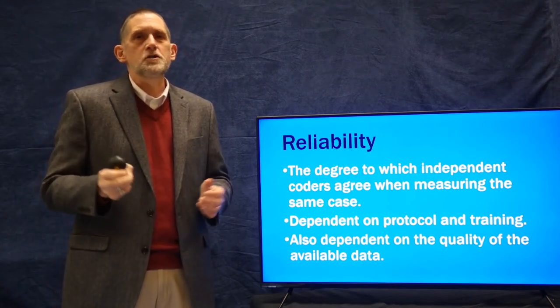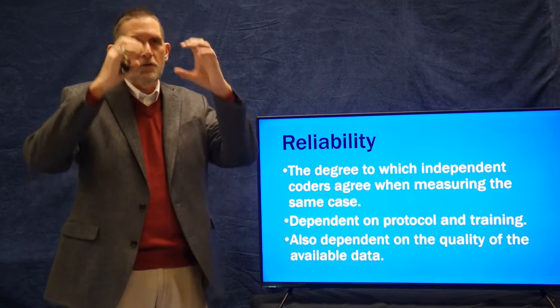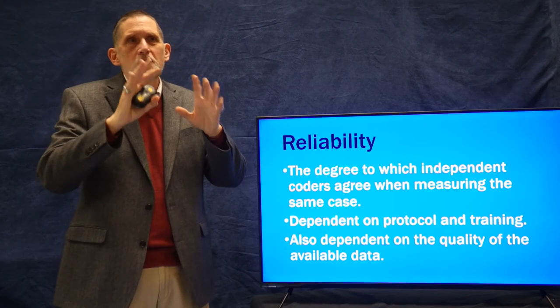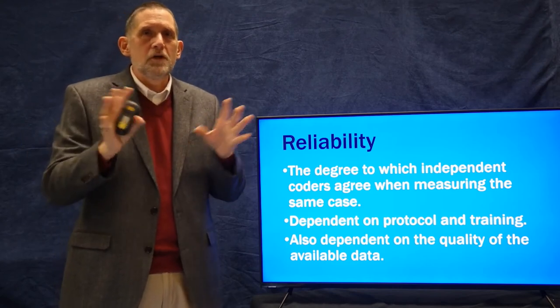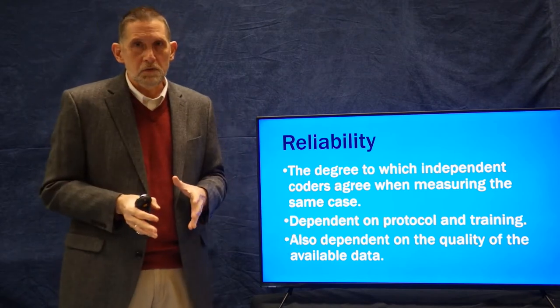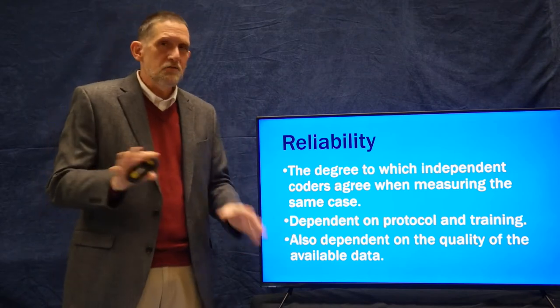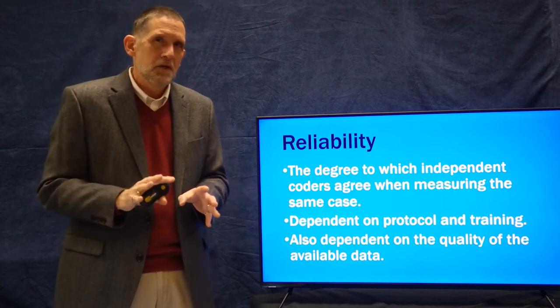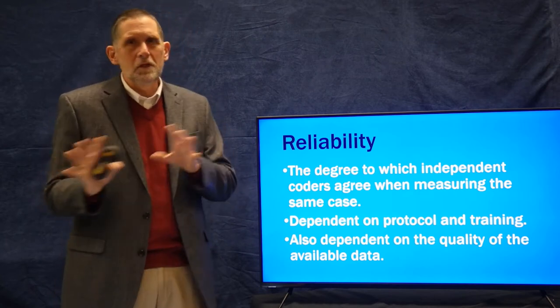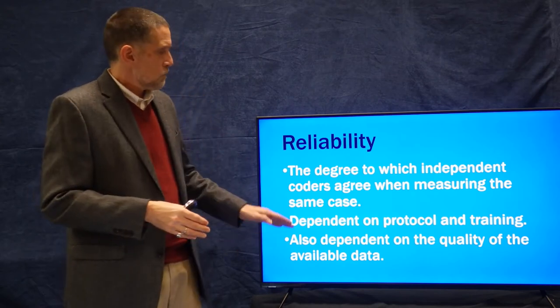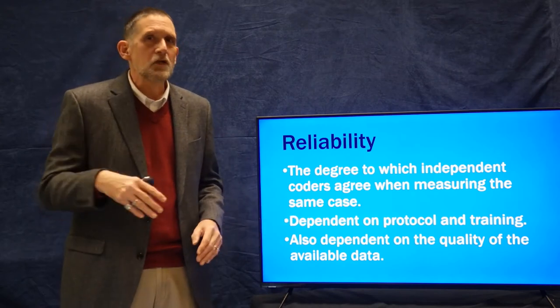It's also dependent on the quality of the data. If you are trying to observe something and you got to do it through binoculars and your binoculars aren't that strong, you're not going to be able to see some of the behaviors even though you've got really good coding protocols in place. So some kinds of data are mushy enough or not visible enough that your reliability is going to be off. But typically, if you have really good protocol, you can even correct for that.